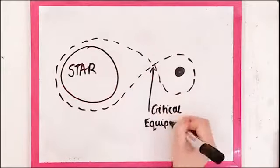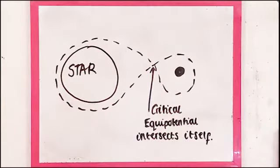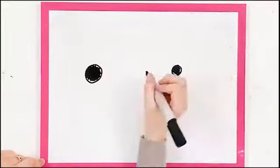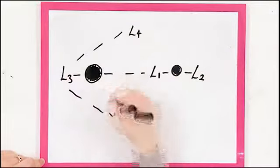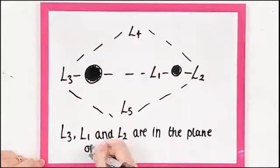The critical equi-potential intersects itself at the L1-Lagrangian point of the system. That's a point where a smaller object will maintain its position relative to the two larger orbiting bodies.